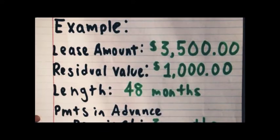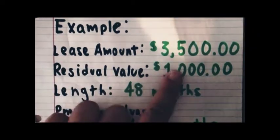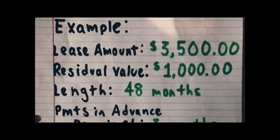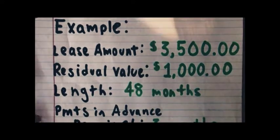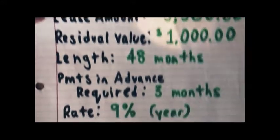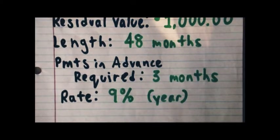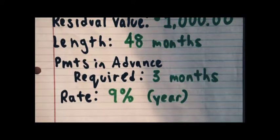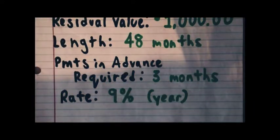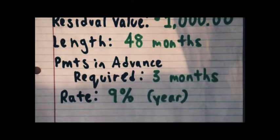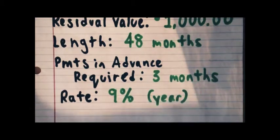Let's work through an example. You have a lease amount of $3,500, a residual value of $1,000, and the length of the lease is 48 months. The company is going to require 3 months of lease payments in advance, using a finance rate of 9% per year. I'm going to demonstrate this using a Texas Instruments BA2+, but you can use this technique with almost any finance calculator.